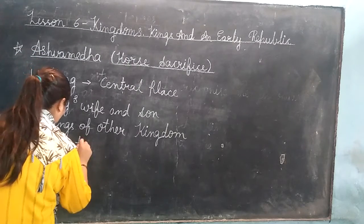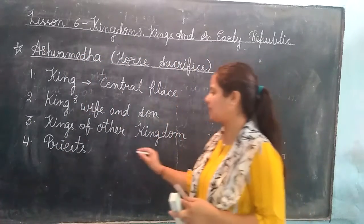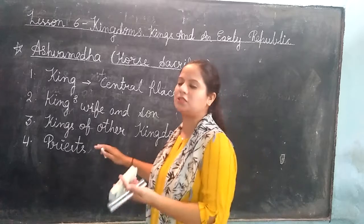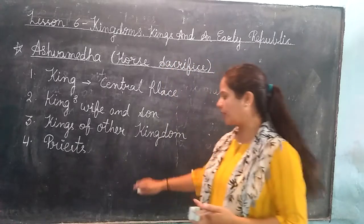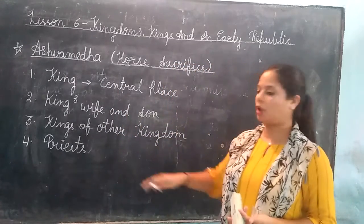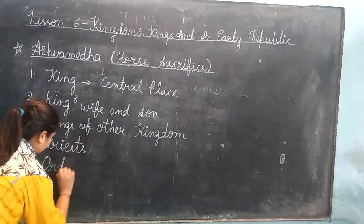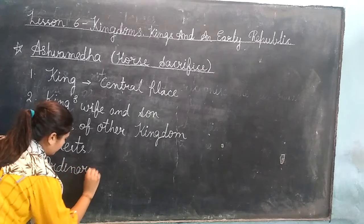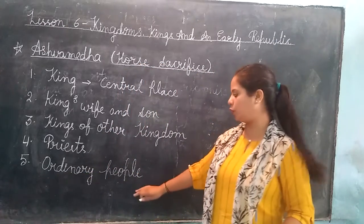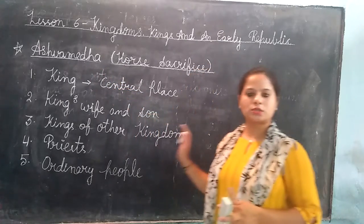The Pujari performs the ritual. The king is anointed — sacred water and special substances are applied on the king's body and all the rituals are performed. The fifth group is ordinary people, who are just watching the ceremony as spectators.